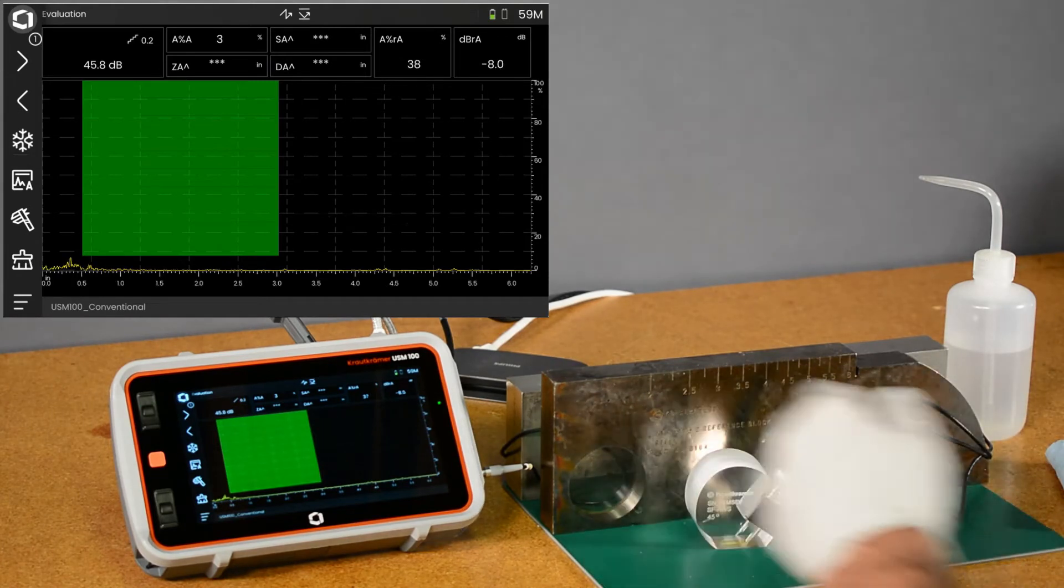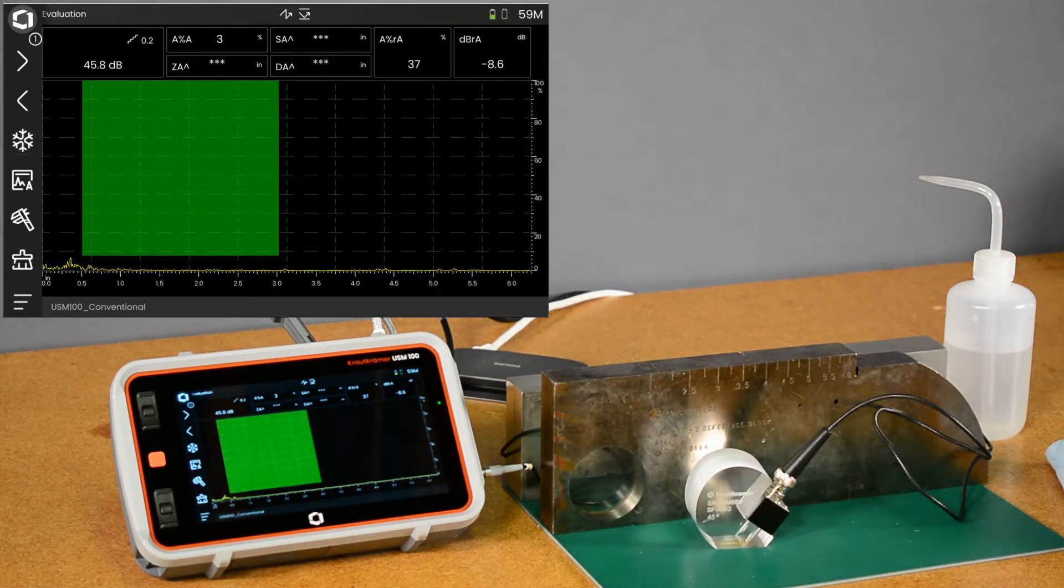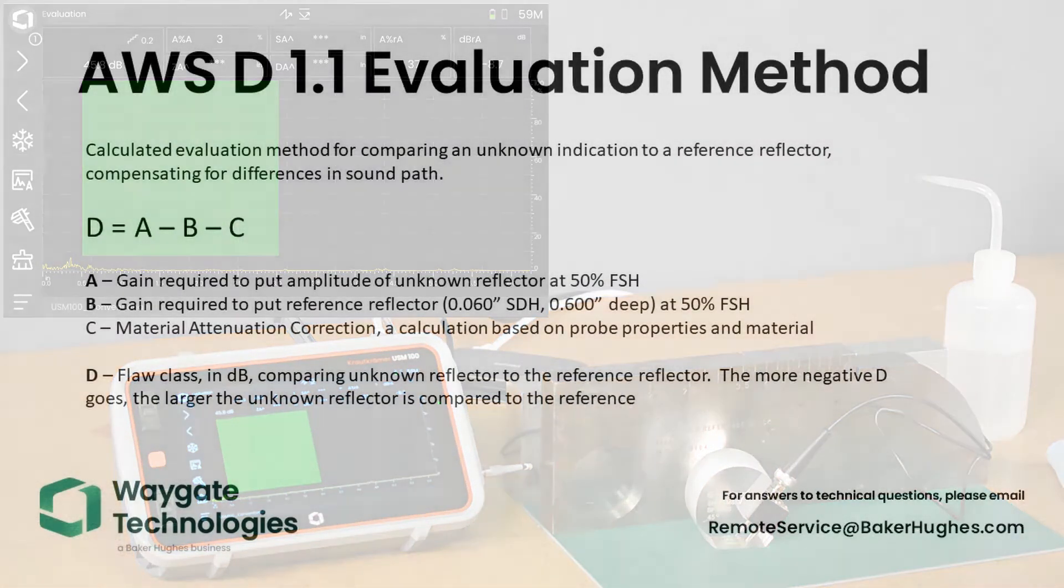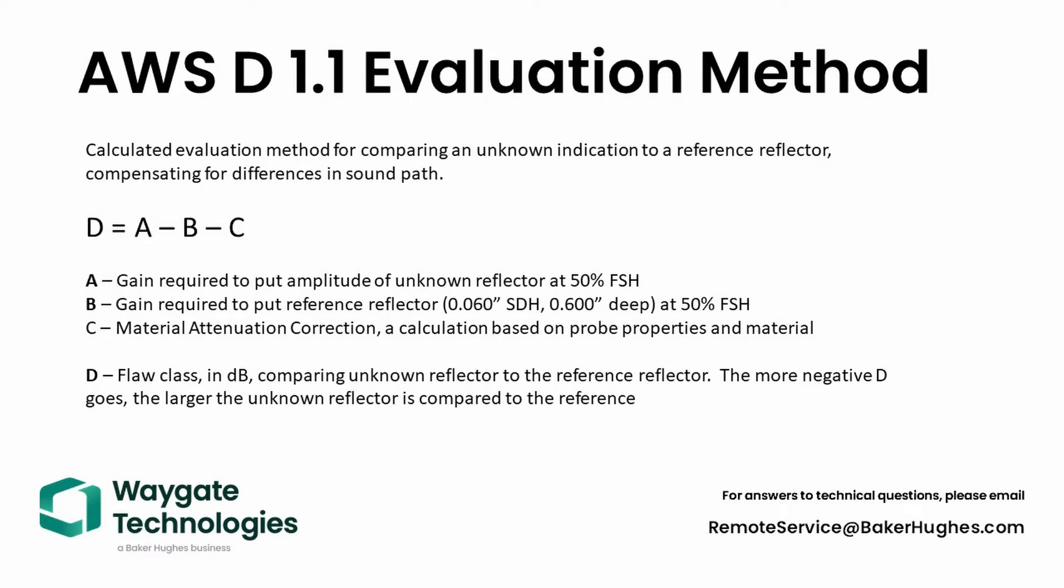Now let's talk about AWS evaluation in general. The AWS evaluation uses a result that is calculated called a class of flaw, expressed in decibels. That calculation comes from comparing the gain of an echo during inspection to the gain required to set a reference indication to 50% screen height. It compares those two gains and also applies a correction factor for attenuation, material attenuation.